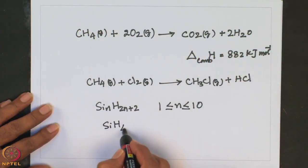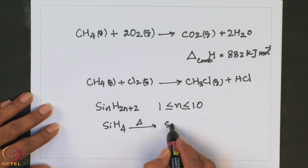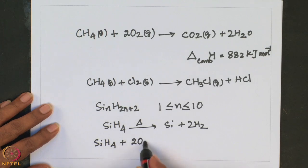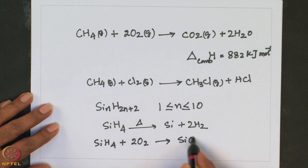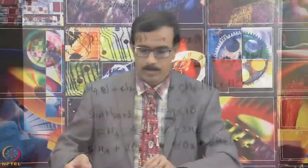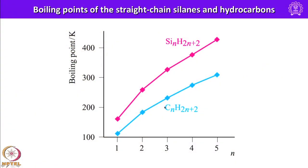Silanes up to 10 silicon atoms in a chain are known, similar to decane. A comparison of the boiling points of the first five straight-chain silanes with their hydrocarbon analogues shows that boiling points increase with increase in the number of atoms in the chain, the same trend as in silanes. Silanes are explosively inflammable in air.